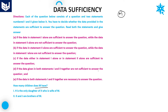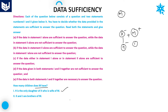H is the only daughter of X, and X is the wife of M. That means M is the husband. In this case, we can definitively say how many children M has — M has one child. So you can get the answer by using statement 1 alone.